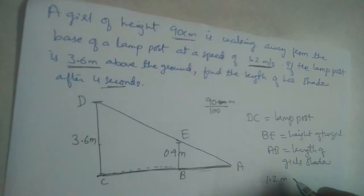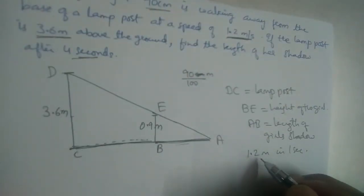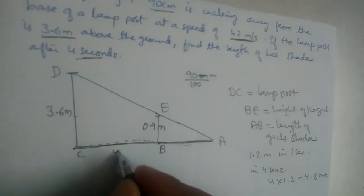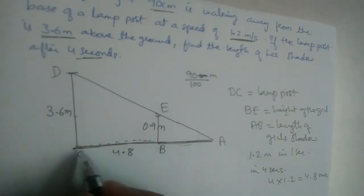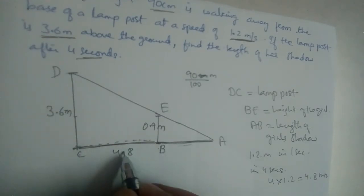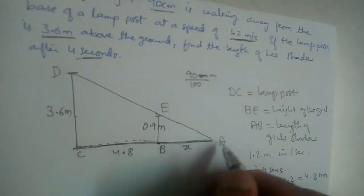The girl covers 1.2 meters in one second, so in four seconds she covers 4 × 1.2 = 4.8 meters. She started from C and walked to B, so CB = 4.8 meters. Let the length of her shadow AB be x.